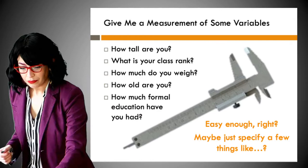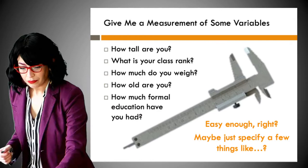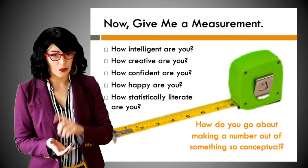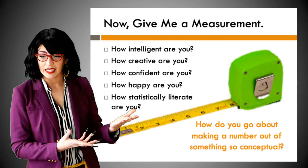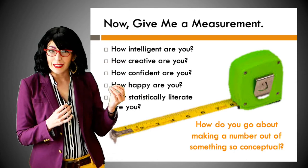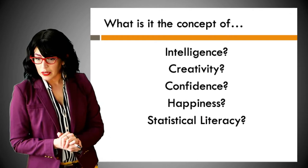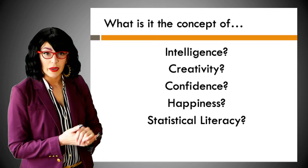Now give me a measurement: How intelligent are you? How creative are you? How confident are you? How happy are you? How statistically literate are you? You will be more by the end of this class. So these are all more conceptual, right? This isn't a simple 'bust out a ruler and measure something.' These require some conceptualization — we have to define all of these terms and then figure out how we're going to measure them. Somebody throw a definition of any one of these concepts in the chat.